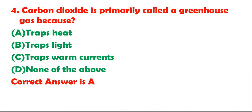Question 4: Carbon dioxide is primarily called a greenhouse gas because: A. Traps heat. B. Traps light. C. Traps warm currents. D. None of the above. Correct answer is A.